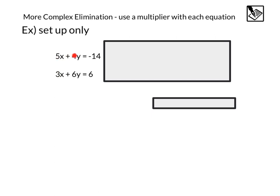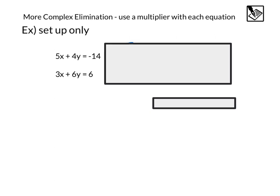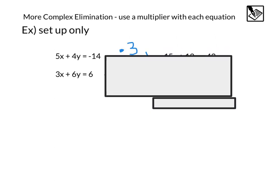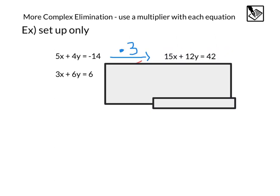It doesn't look like any of these variables will cancel out if we add or subtract them. I also don't think I can multiply any of the numbers to cancel. Like I can't multiply 3 to get 5 easily or vice versa, 4 to get 6. I guess I could use fractions, but that gets a little complex. So check this out. This first equation, we're going to multiply by 3. That's going to give us 5 times 3 is 15x. 4 times 3 is plus 12y. Negative 14 times 3 is going to give us a negative 42.